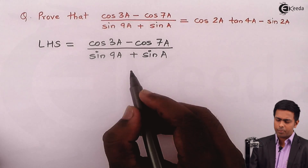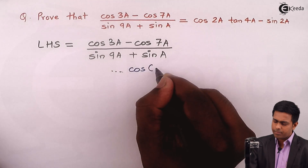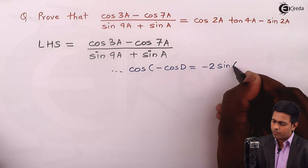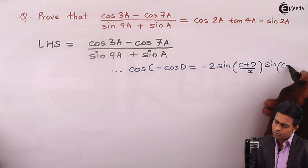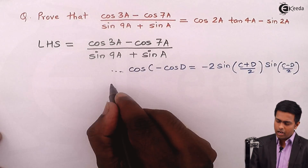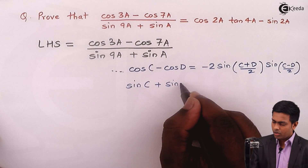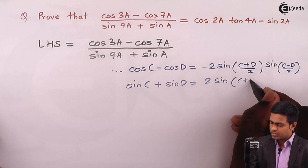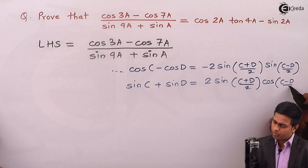So what is the formula we are going to apply here? We have the formula of cos C minus cos D which is equal to minus 2 times sin of (C plus D)/2 into sin of (C minus D)/2. We will apply this identity in the numerator, and for the denominator we'll apply sin C plus sin D which is equal to 2 times sin (C plus D)/2 into cos (C minus D)/2.